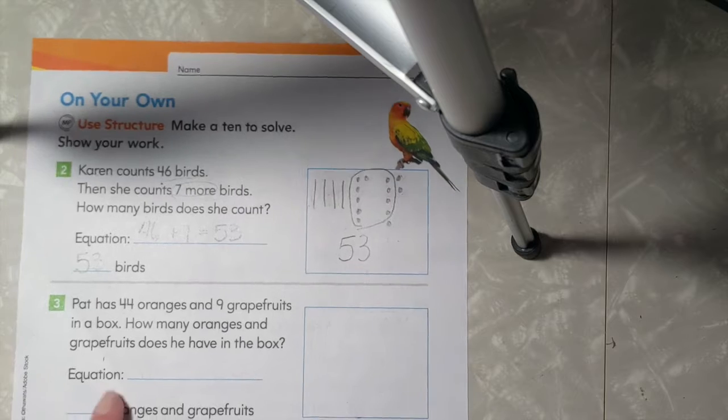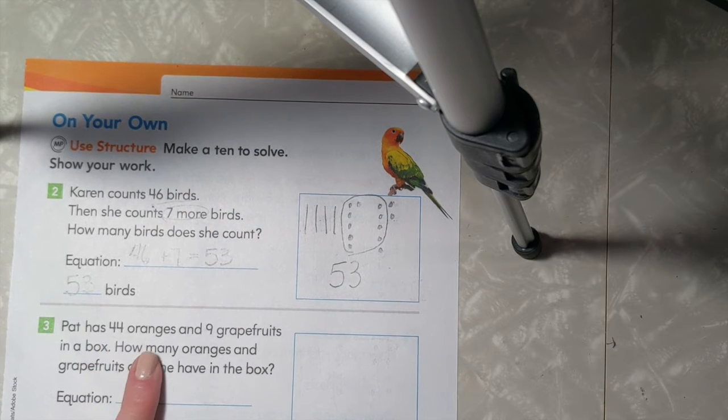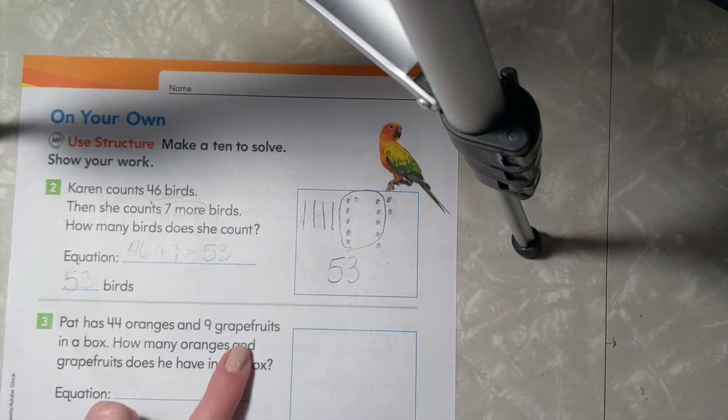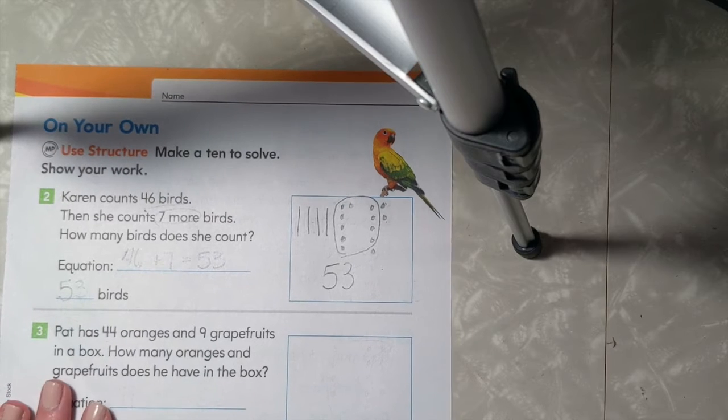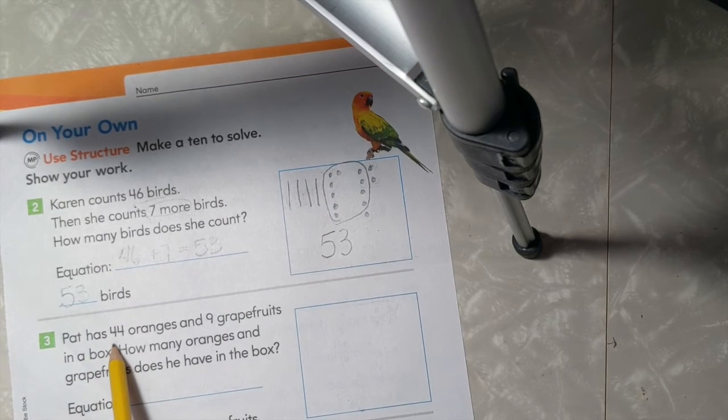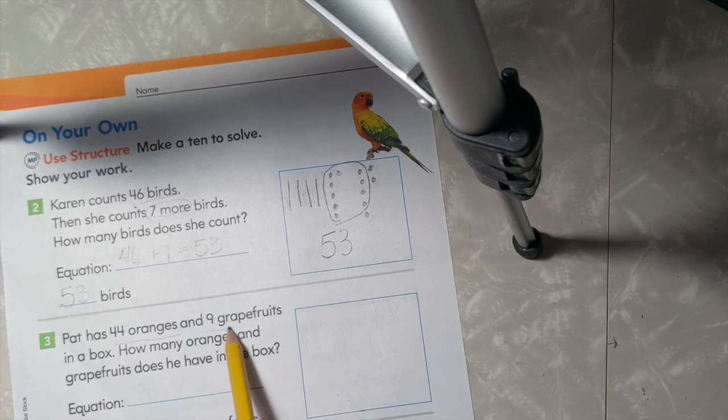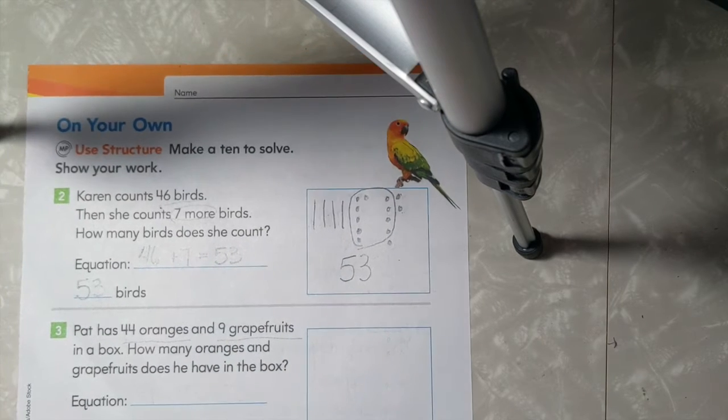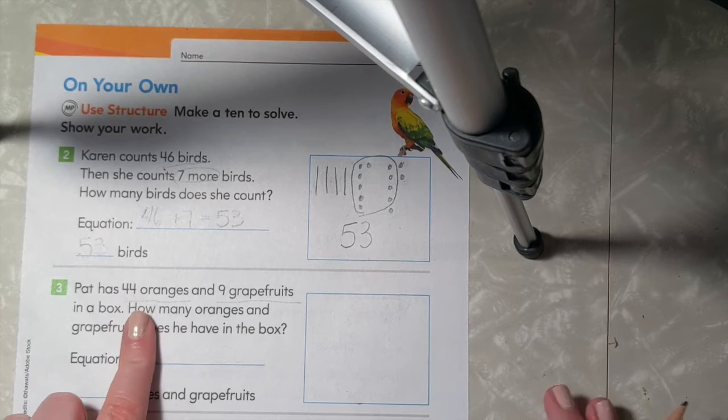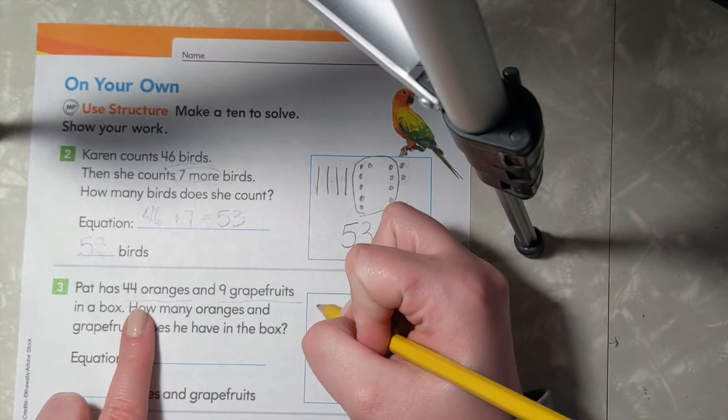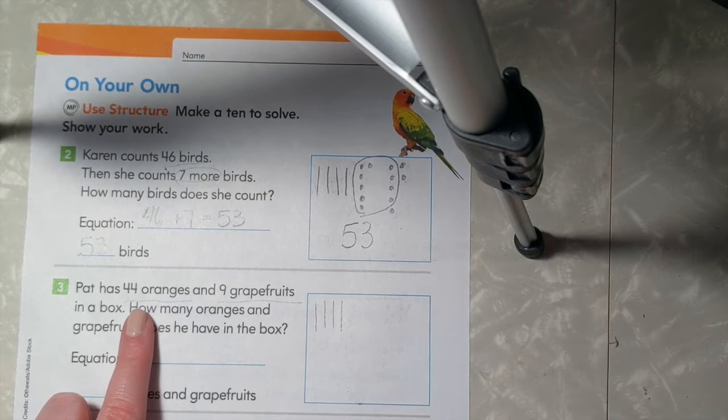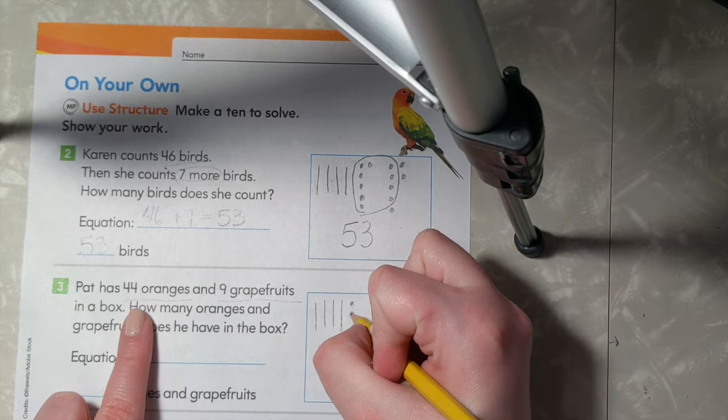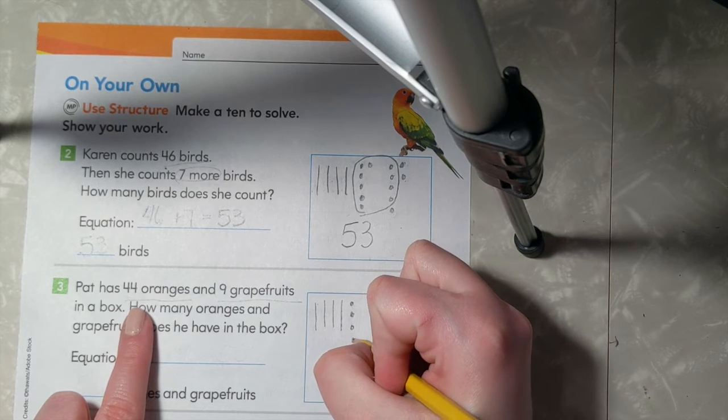Let's take a look at number 3. Pat has 44 oranges and 9 grapefruits in a box. How many oranges and grapefruits does he have in the box? So we are looking for how many oranges and grapefruits all together in the box. Let's start with our oranges. I have 44. So 1, 2, 3, 4 groups of 10 and 1, 2, 3, 4 ones.